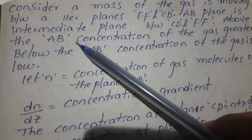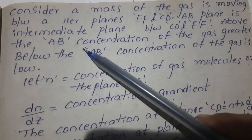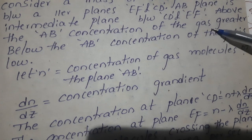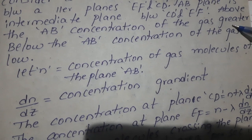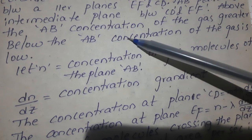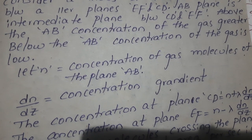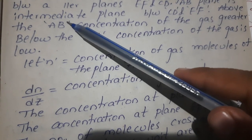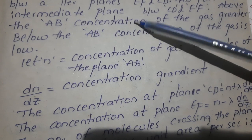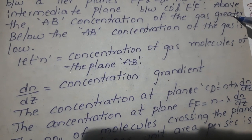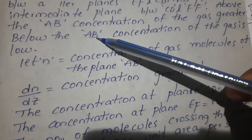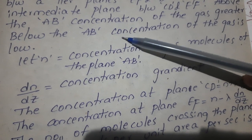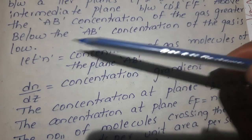Above the plane AB, next to the CD layer, the gas concentration is higher. AB is the intermediate plane and the gas concentration is greater above it.